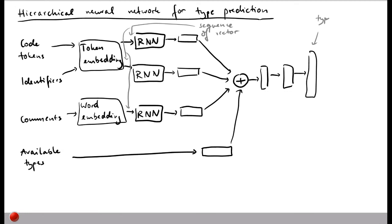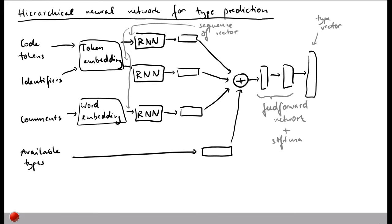This concatenated vector is given to a feed-forward neural network with a couple of layers, which at the end predicts a type vector. A softmax function is applied to turn this type vector into something we can interpret as a probability distribution over possible types.